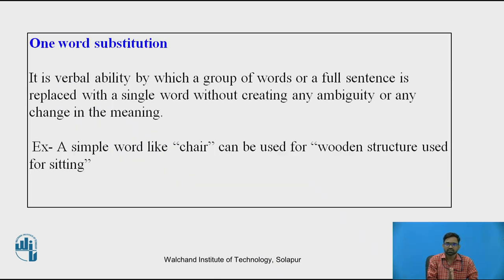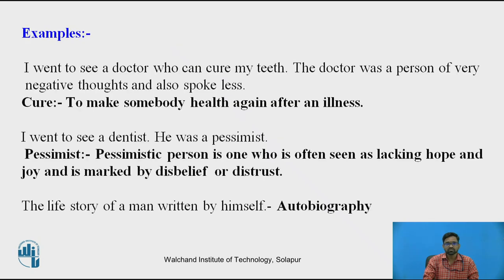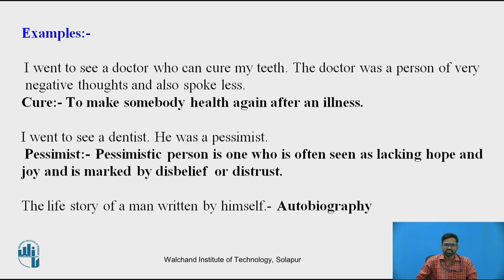One word substitution is a verbal ability by which a group of words or a full sentence is replaced with a single word without creating any ambiguity or change in meaning. For example, a wooden structure used for sitting — we simply call it a chair. Another example: I went to see a doctor who can cure my teeth, and the doctor had very negative thoughts and spoke less. We say: I went to see the dentist; he was a pessimist. Pessimist is a one word substitution.